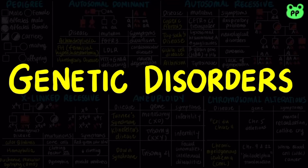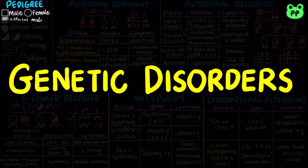Genetic disorders follow different patterns of inheritance. Family history of genetic disorders can be represented as a pedigree, with squares representing males, circles representing females, and shaded shapes representing affected individuals.